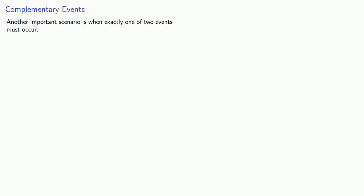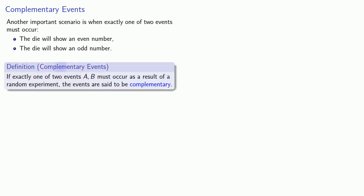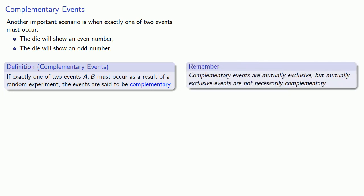Another important scenario is when exactly one of two events must occur. We roll a die and we have two events: the die will show an even number, or the die will show an odd number. This leads us to the definition of complementary events — that's spelled with an E, not an I; you're not saying nice things about them. If exactly one of two events, A and B, must occur as a result of a random experiment, the events are said to be complementary. It's very easy to confuse complementary and mutually exclusive. The crucial difference is that one of them must occur. Complementary events are mutually exclusive, but mutually exclusive events are not necessarily complementary.